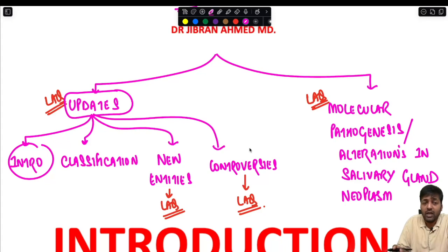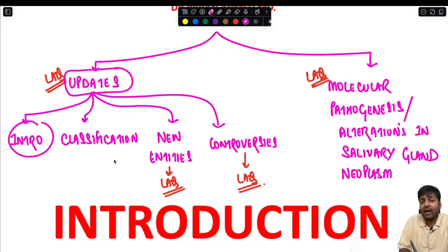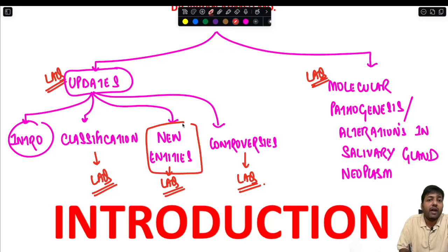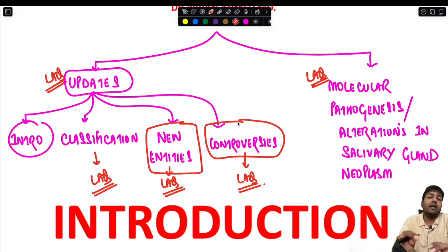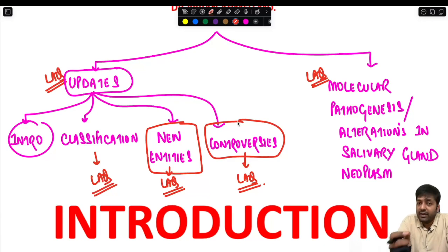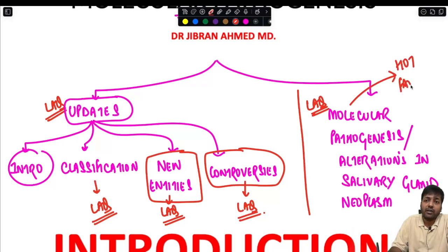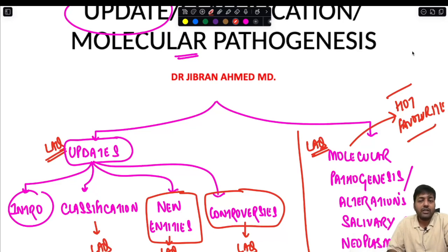Within the updates, each subsection can be asked as a separate long answer question — for example, the WHO Fifth Edition salivary gland tumor classification, the new entities, or all the controversies surrounding salivary gland neoplasms. The second part of the lecture covers molecular pathogenesis or molecular alterations in salivary gland neoplasm, which is a hot favorite question for this year's examination.